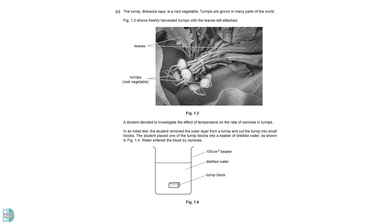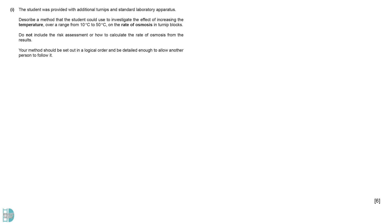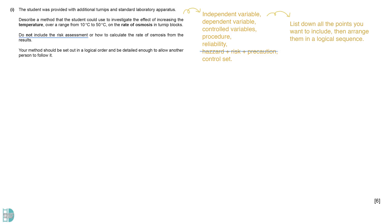C shows another experiment that investigates the effect of temperature on the rate of osmosis in turnips. In a design experiment question, you must include the description of the three variables, the critical procedure, reliability, safety precautions, and sometimes the control set. List down all the points you want to include, then arrange them in a logical sequence. However, risk assessment is not required in this case.